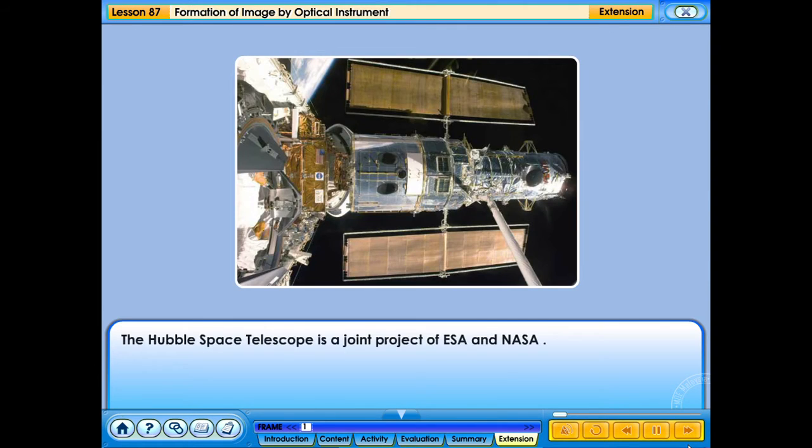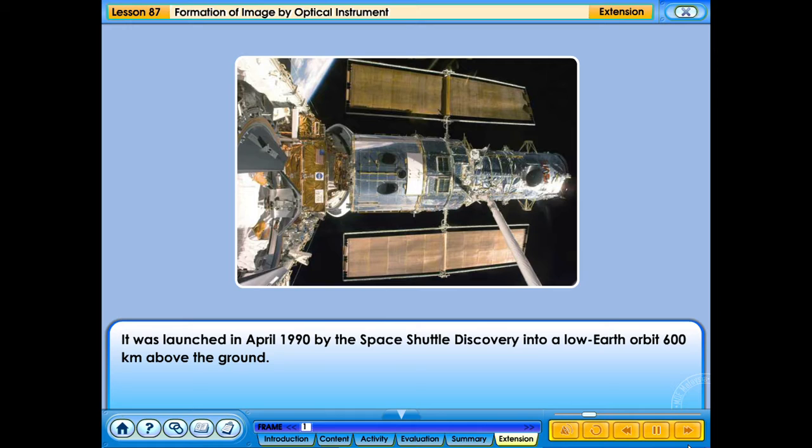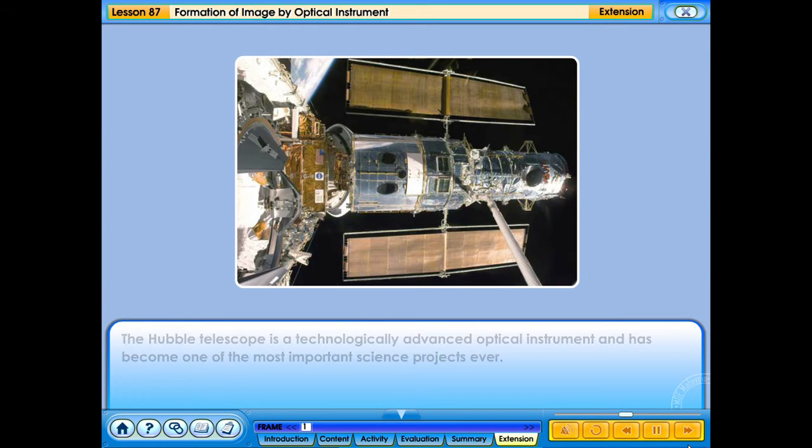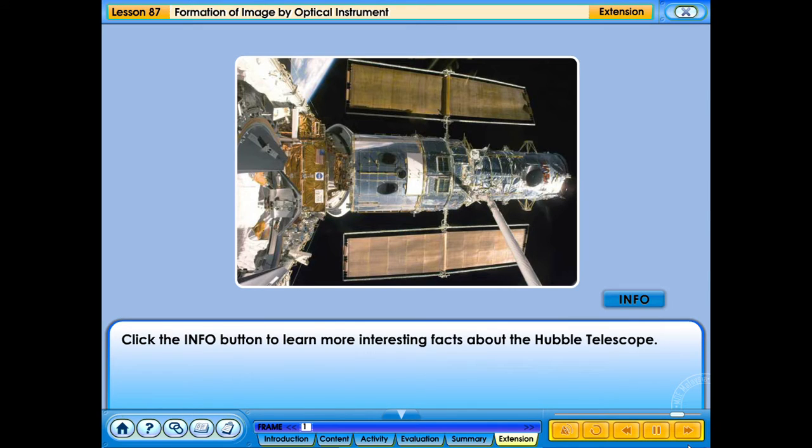The Hubble Space Telescope is a joint project of ESA and NASA. It was launched in April 1990 by the space shuttle Discovery into a low Earth orbit 600 kilometers above the ground. The Hubble telescope is a technologically advanced optical instrument and has become one of the most important science projects ever. Click the info button to learn more interesting facts about the Hubble telescope.